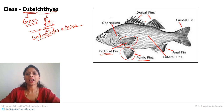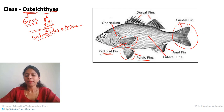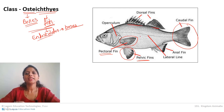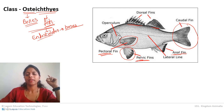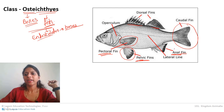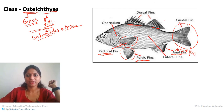The large fin at the tail region is called the caudal fin — it is unpaired. There are also two dorsal fins on the top, and a ventral fin (also called the anal fin) on the ventral side. So in summary: one pair of pectoral fins, one pair of pelvic fins, two dorsal fins, one ventral/anal fin, and one caudal fin.